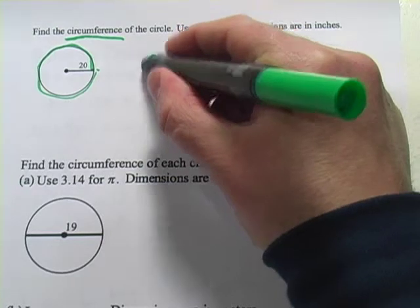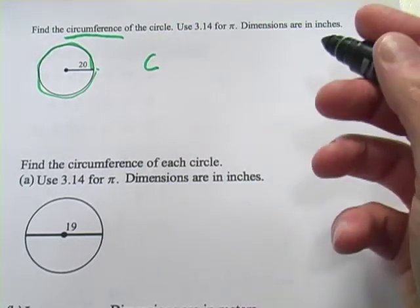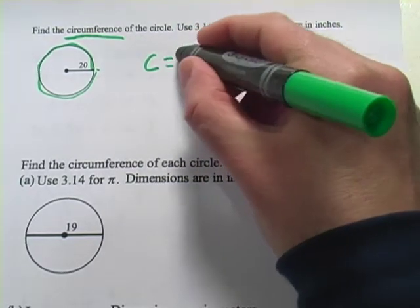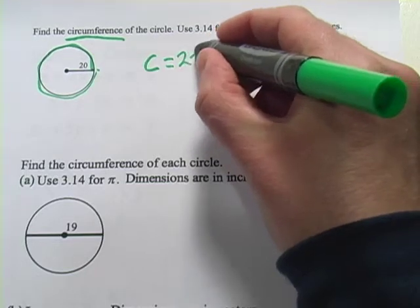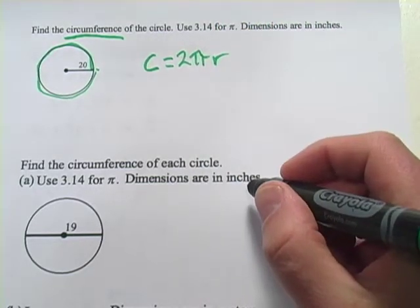And there's a formula for circumference, and if you use it enough, you'll probably memorize it. Circumference is 2 times pi times the radius, 2πr.